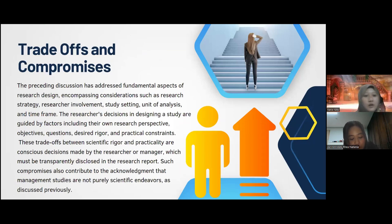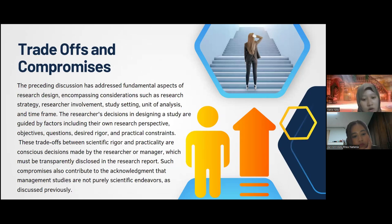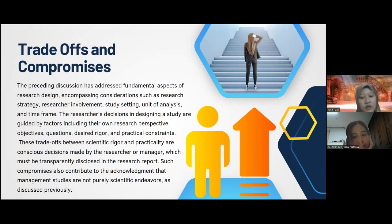The preceding discussion addressed fundamental aspects of research design, encompassing considerations such as research strategy, research involvement, study setting, unit of analysis, and time frame. The researcher's decisions in designing a study are guided by factors including their research perspective, objectives, questions, desired rigor, and practical constraints. This trade-off between scientific rigor and practicality is a conscious decision that must be transparently disclosed in the research report, acknowledging that management studies are not purely scientific.